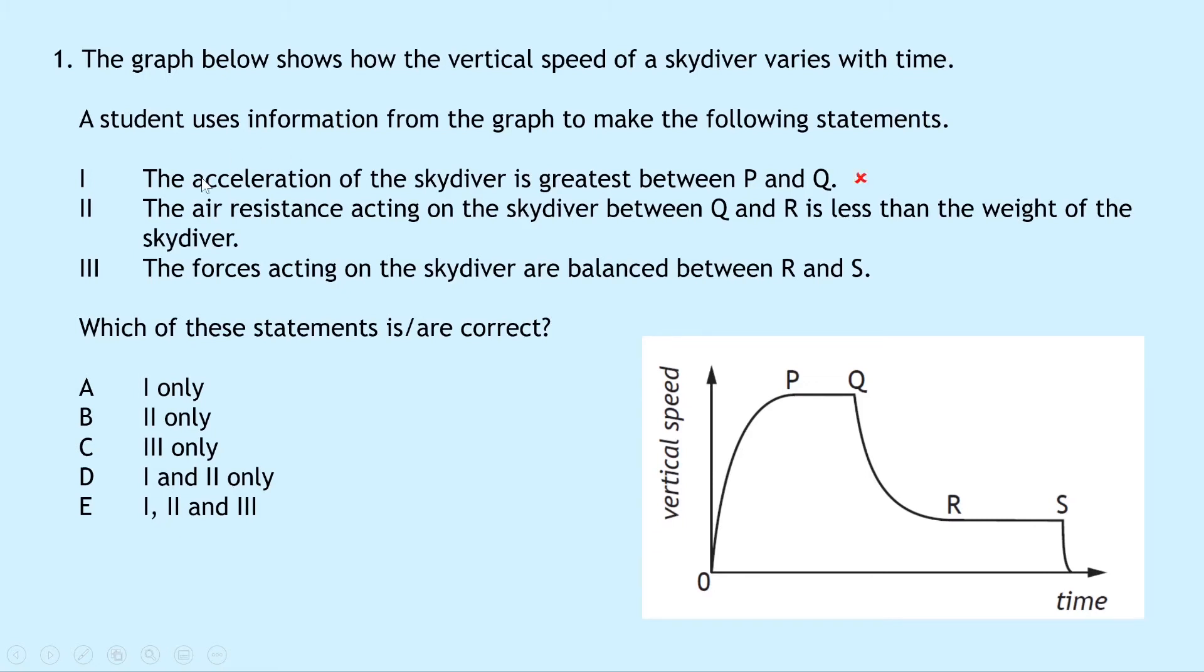Statement two: the air resistance acting on the skydiver between Q and R is less than the weight of the skydiver. Well, you'll notice between Q and R we've got a rapid deceleration, a decrease in speed. So that must mean that the air resistance upwards is actually bigger than the weight of the skydiver downwards. So that means this one also has to be false.